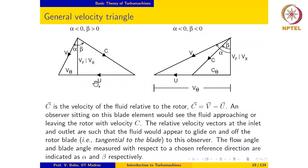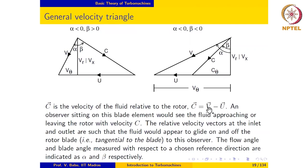We ended the previous lecture by introducing the concept of relative velocity of fluid with respect to the rotor, and we explore this concept further in this lecture. We start by writing down the formal definition: the relative velocity vector c is the absolute velocity vector v minus the blade velocity vector u. We may also write this as v equals c plus u.